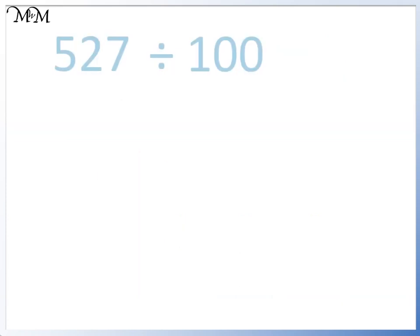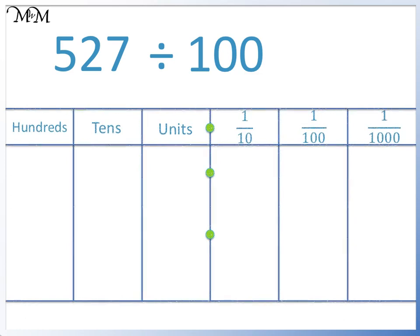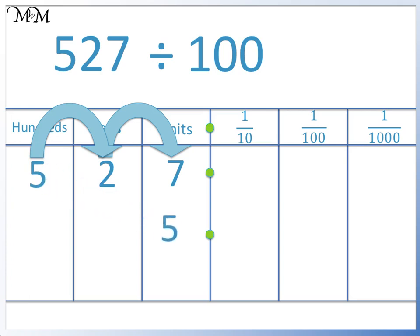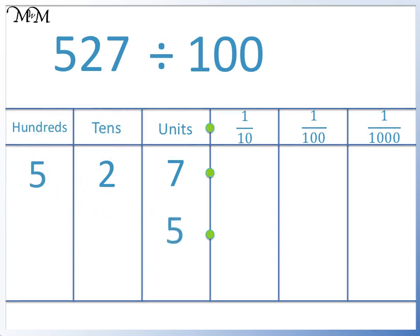Let's look at another example. 527 divided by 100. Again, we'll place the digits on a place value grid. Remember, to divide by 100, we move each digit of 527 two places to the right. We'll start with the 5: 1, 2.